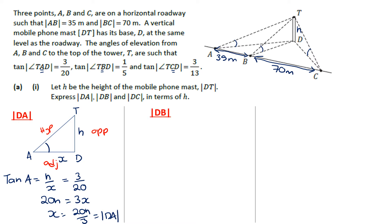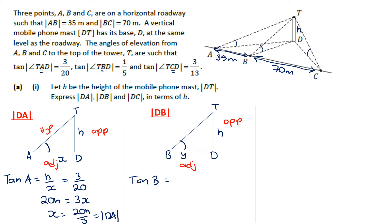We do something similar for the next two sides. Working with the triangle with B and D: here's B, D, and T. I'll call DB as Y. The tan of B is H over Y, which equals 1 over 5 as given. So Y equals 5H, and that is the length of DB.